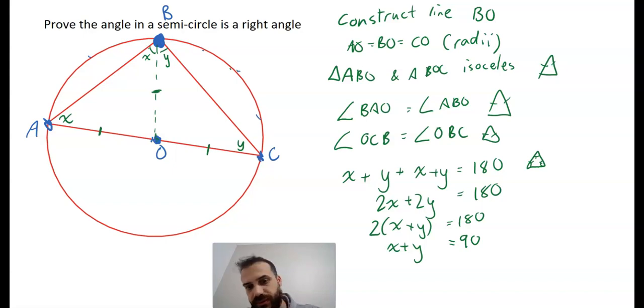And X plus Y is equal to angle ABC. Therefore, X plus Y equals angle ABC. Therefore, we have a right angle.